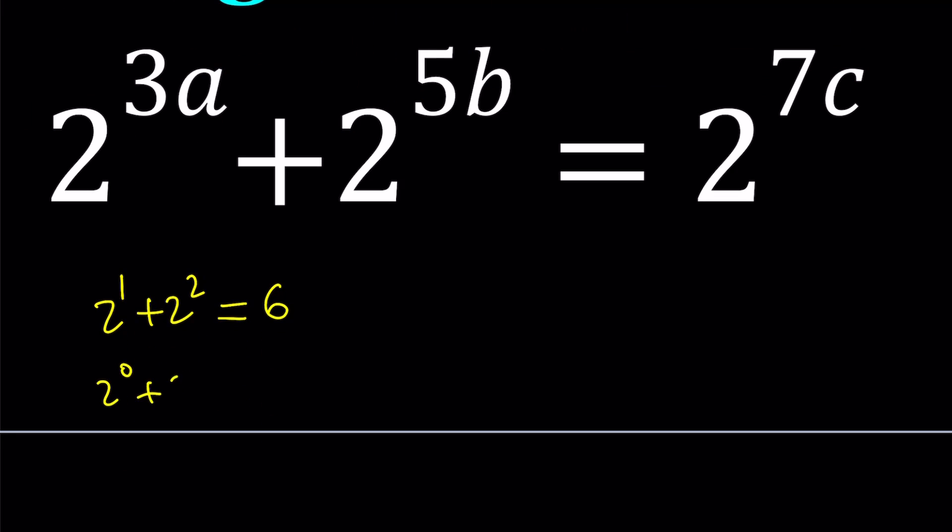If you add 2 to the power of 0 with 2 to the power of 5, you get 33. Again, that's not a power of 2. But notice that this is 1 more than a power of 2. Well, duh, because this is 1.